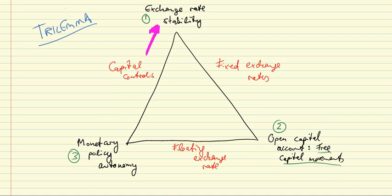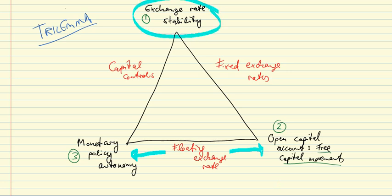Third, we can emphasize monetary policy autonomy and open capital accounts, but then we may have to sacrifice exchange rate stability — meaning we must have a floating exchange rate. In this manner, we can always choose two out of these three goals.